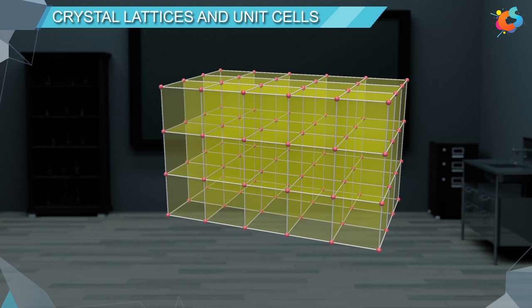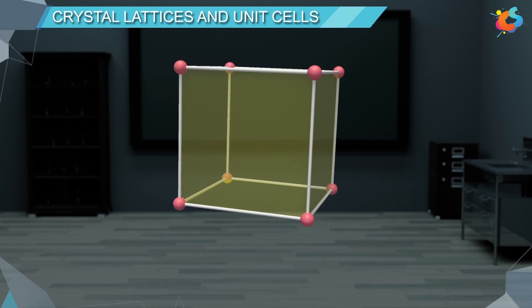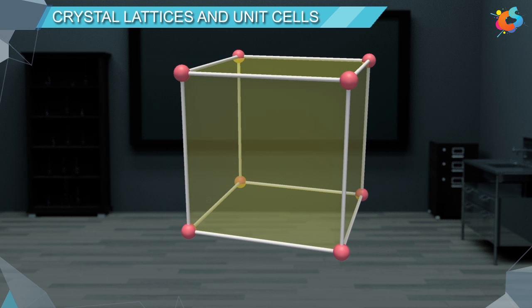A unit cell is represented by three edges A, B, and C along the X, Y, and Z axes. Please note that these edges may or may not be mutually perpendicular to each other. In some cases, they are mutually perpendicular, and in some cases, they are inclined to one another.